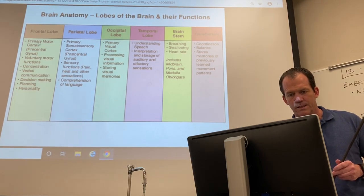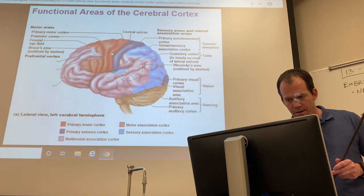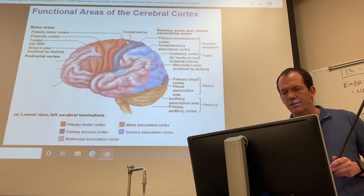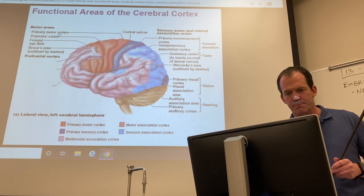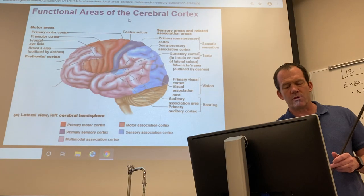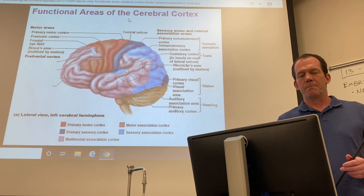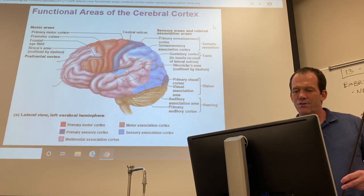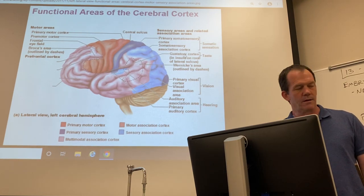Looking at the primary motor cortex on the precentral gyrus: a sulcus is a groove, a gyrus is a bulge. The precentral gyrus is located right in front of the central sulcus. I just want you to know the functions of these regions — where they are is useful, but I'm going to go over a select list of functional areas and focus on what they do.